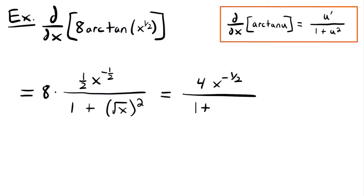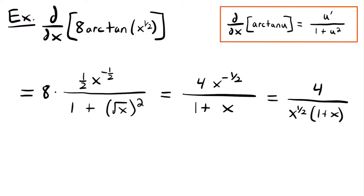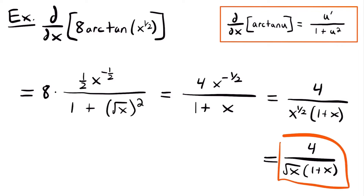Dividing by 1 plus the square root of x squared — and remember, when you square a square root they cancel out — we're just left with x, so we have 1 plus x in the denominator. We simplify further by moving x to the negative 1/2 power to the denominator, giving it a positive exponent: 4 divided by x to the 1/2 power times (1 plus x). Rewriting x to the 1/2 as square root of x, our final answer is 4 divided by the square root of x times (1 plus x).